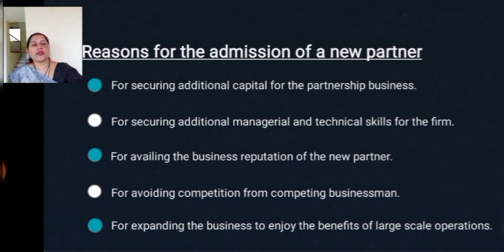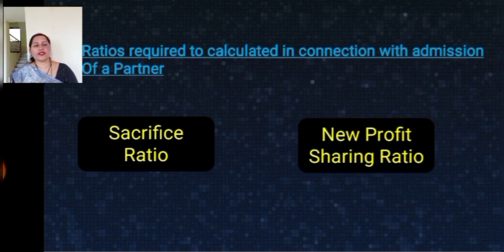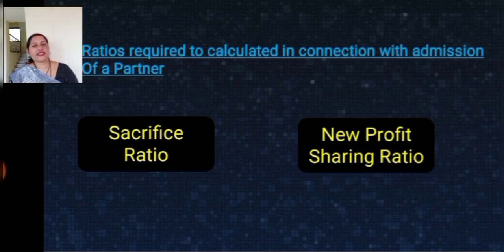The next topic is the ratios to be calculated at the time of admission of a new partner. Here we have to calculate two ratios. The first one is the sacrifice ratio and the second one is the new profit sharing ratio. These are the two ratios we have to calculate at the time of admission of a new partner into an existing partnership business. Let us discuss these two ratios in detail.